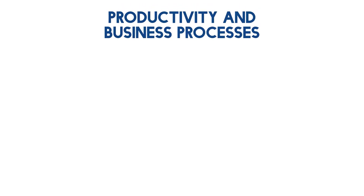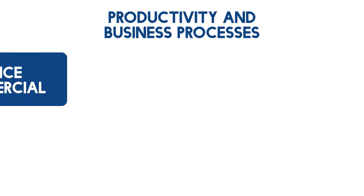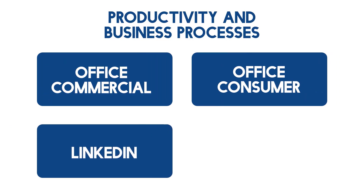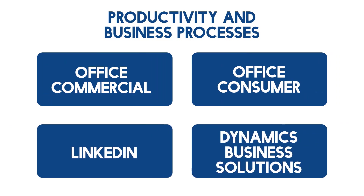Starting with productivity and business processes. This segment is made up of a further four areas: Office Commercial, Office Consumer, LinkedIn, and Dynamics Business Solutions. Office Commercial and Office Consumer is the sale of products in the Microsoft Office 365 range to businesses and individuals. So this is software such as Excel, Word, PowerPoint, SharePoint, Teams, and Skype.